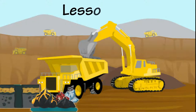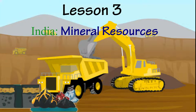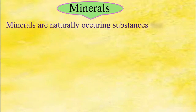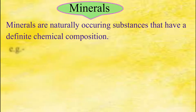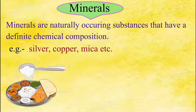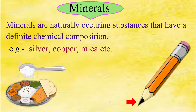Let us go through the main points of the lesson. India Mineral Resources: Minerals are naturally occurring substances that have a definite chemical composition. For example, silver, copper, mica, etc. Moreover, salt in your food and graphite in your pencil are also minerals. These minerals are found in the rocks.